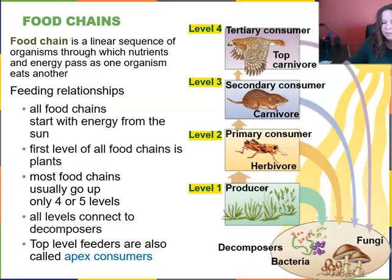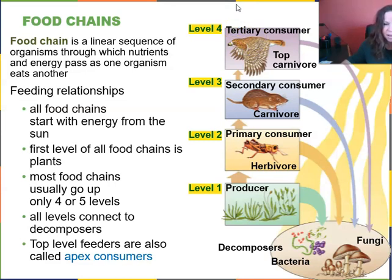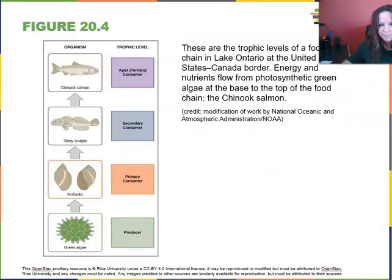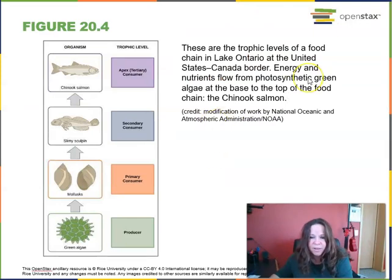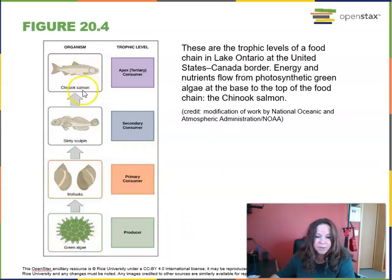Tertiary consumers at level four are our top carnivores. All levels connect, as shown by arrows, to our decomposers who help recycle everything when it's all said and done. The top-level feeders — our tertiary consumers — are called apex consumers. Sometimes we also have a next level called quaternary consumers, but an ecosystem has to be very healthy, diverse, and rich in order to support that many levels. Here's an example of trophic levels in Lake Ontario near the Canada-U.S. border, where energy and nutrients flow from photosynthetic green algae at the base up to the apex predator, the Chinook salmon.